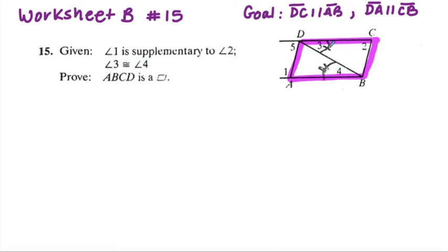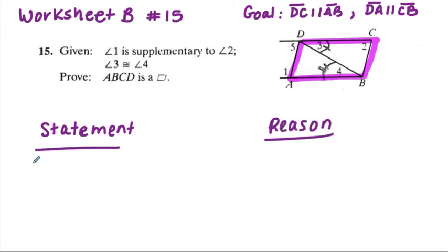I was given that angle 3 was congruent to angle 4, and so right off the bat I can see that DC is parallel to AB. So first I went with that given: angle 3 congruent to angle 4, which was given. That allowed me to say that DC was parallel to AB.